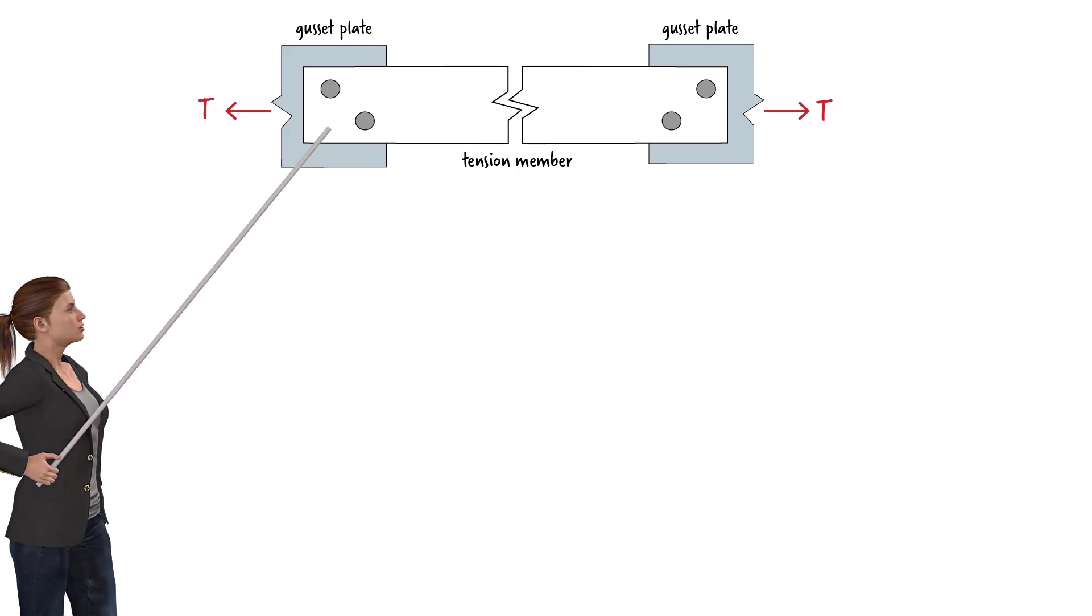This hole configuration offers two possible failure paths. The rupture of the net section could occur along this path, or along this path. The path that produces the smaller net area governs the design.